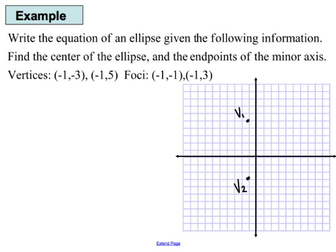My foci are at negative 1, negative 1 and negative 1, 3. Since I can see my vertices and my foci on the same line, I should be able to find the center of my graph using what I know about the symmetry of the ellipse. The center has to be right in the middle of this line, because knowing that the center is always the midpoint of the major and minor axes will help you find it.